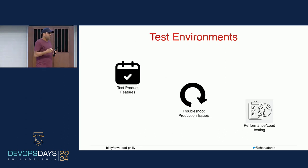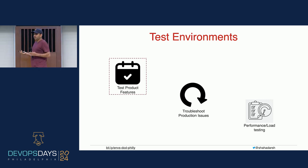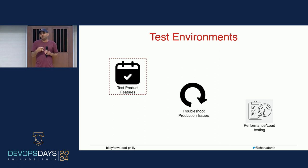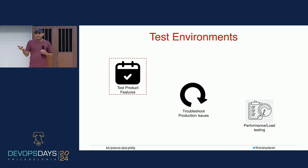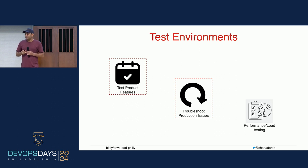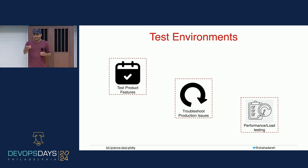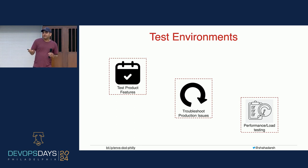Then there are test environments. One of the things is testing product features — having an easy way to test environments and product features, especially major ones that people need to manually check. For example, if you have a UI change that you want someone to test and check the user experience, having an environment where you can deploy, share a link, and they can test those changes. There's also production issue troubleshooting and performance and load testing — if you want to simulate traffic scenarios, having a dedicated environment gives you more confidence about those changes.